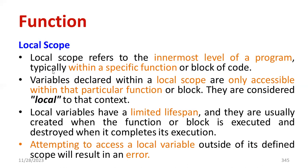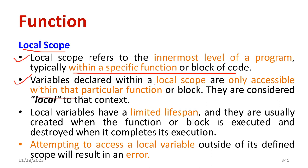First, I'm going to talk about the meaning of local scope or local variable. Local scope refers to the innermost level of the program, typically within a specified function or a block of code. Variables declared within the local scope are only accessible within that particular function or block — that is considered a local variable. The local variable has a limited lifespan.